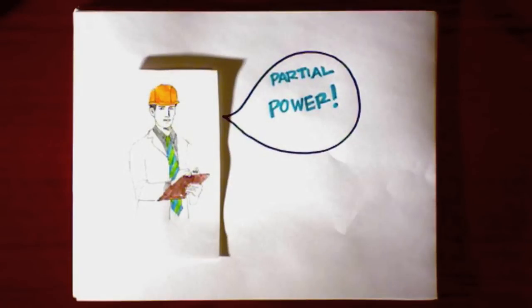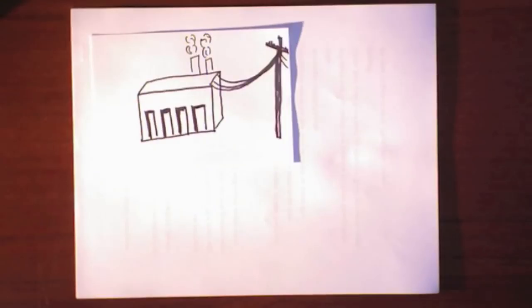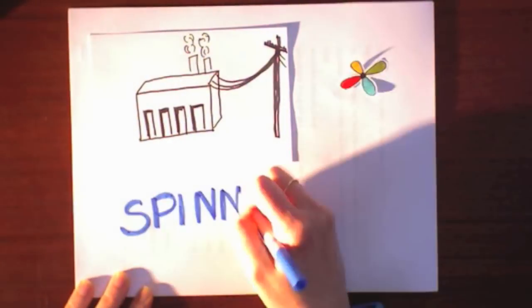First, the folks in charge will order some power plants to spin at partial power. So if something happens, like say if a power plant goes offline for some reason, the grid operator can call on those guys to turn up the boilers and spin up to full power.